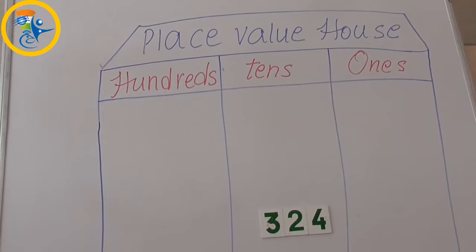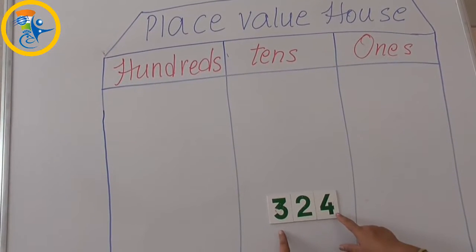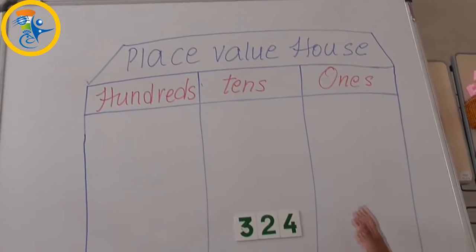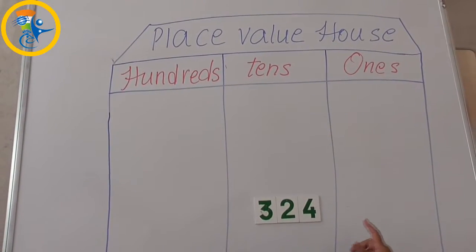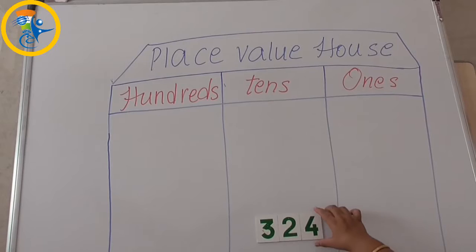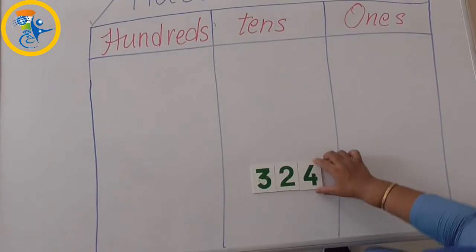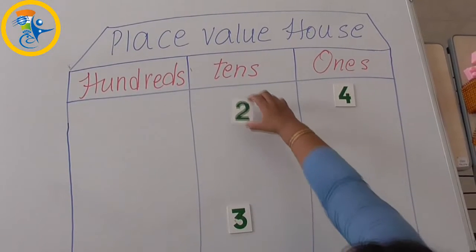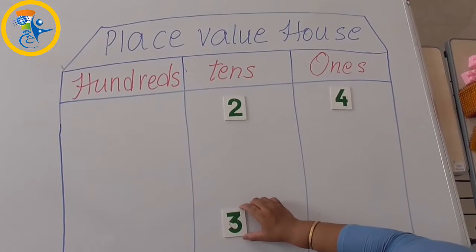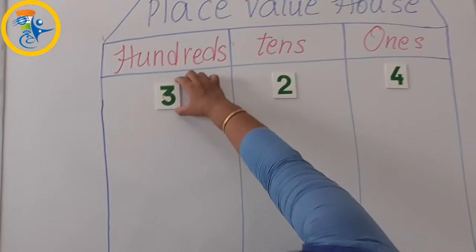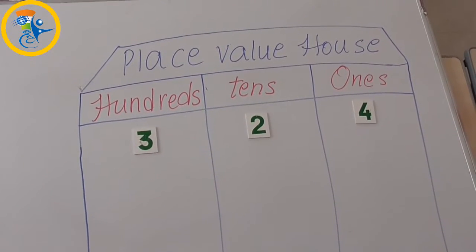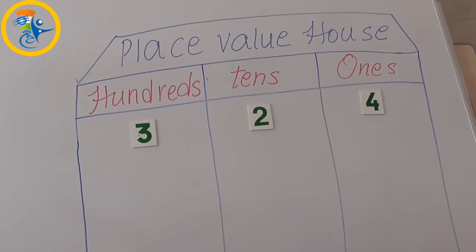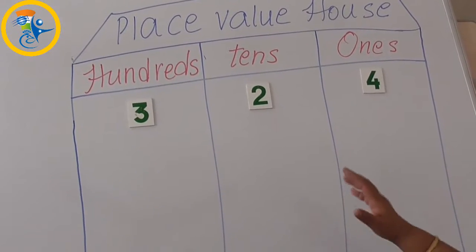Let us understand with one more example — the number 324. As you know, the rule of this house is that you can place only one digit in one room. So 4 goes in the ones room, 2 goes in the tens room, and 3 goes in the hundreds room. Now let us understand the value of each digit in 324.